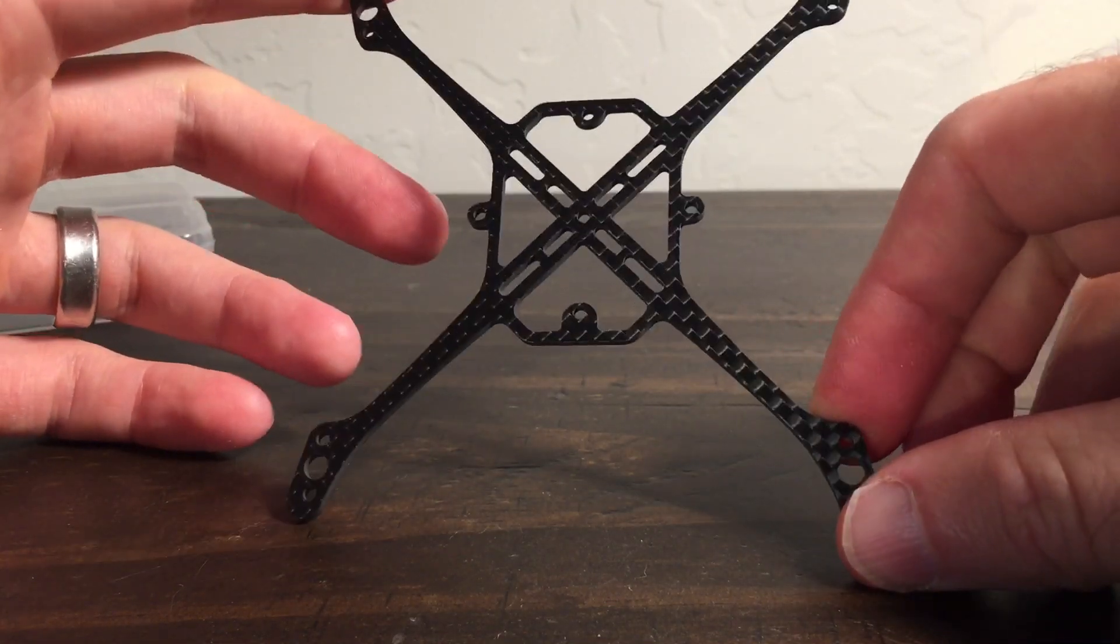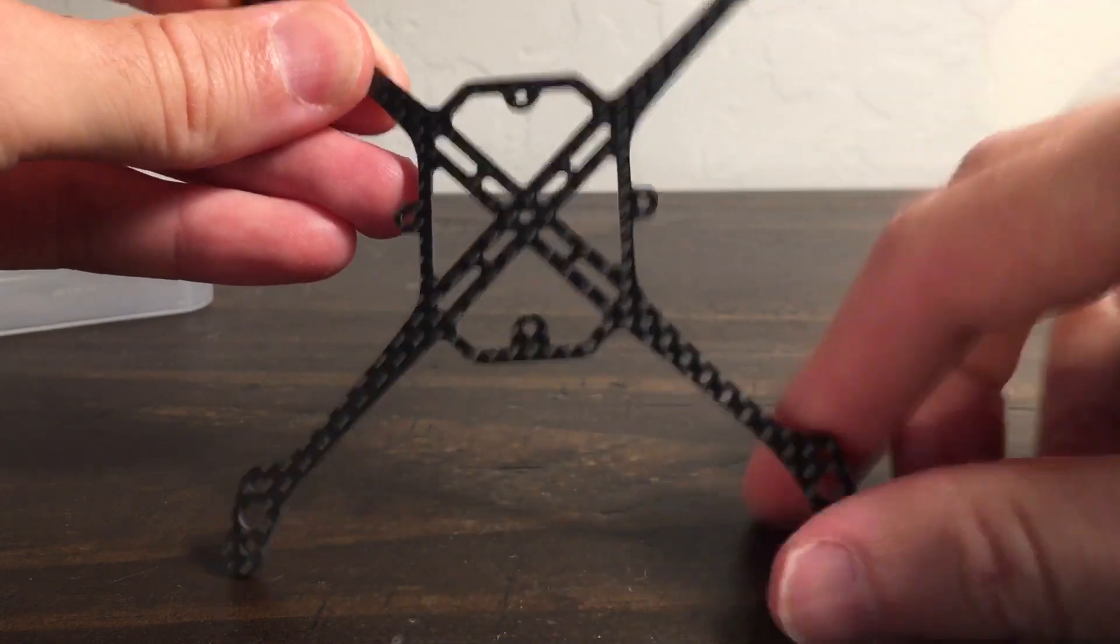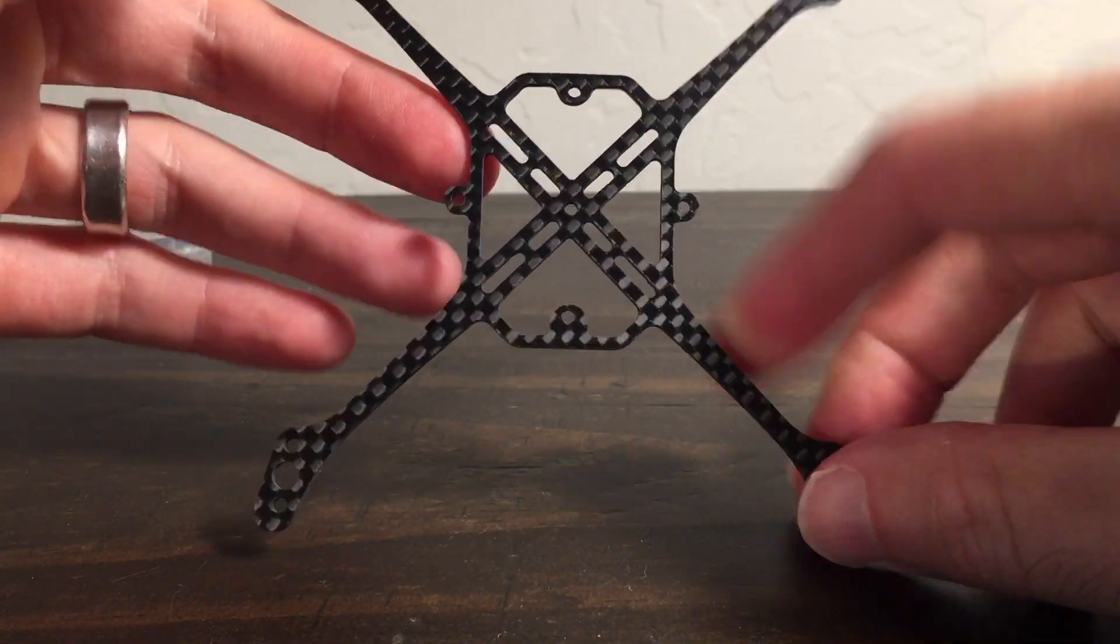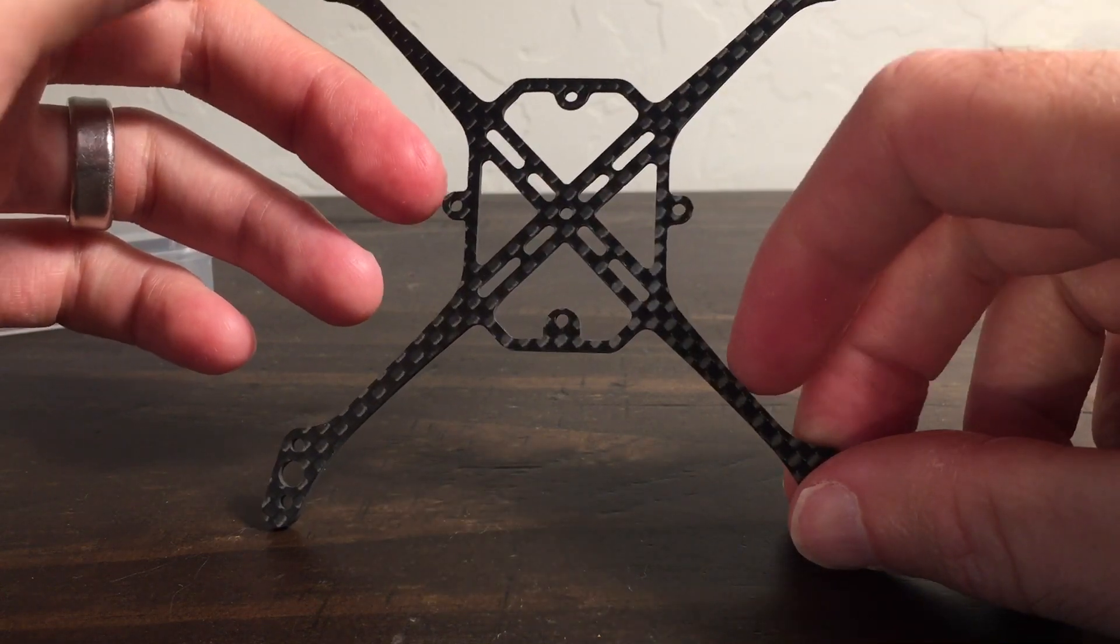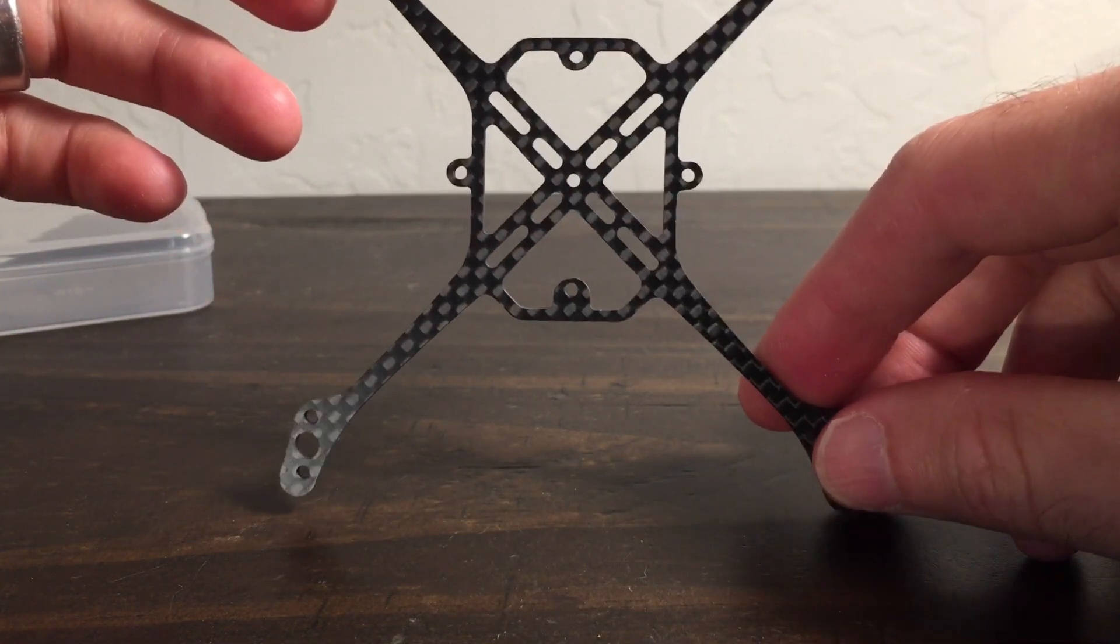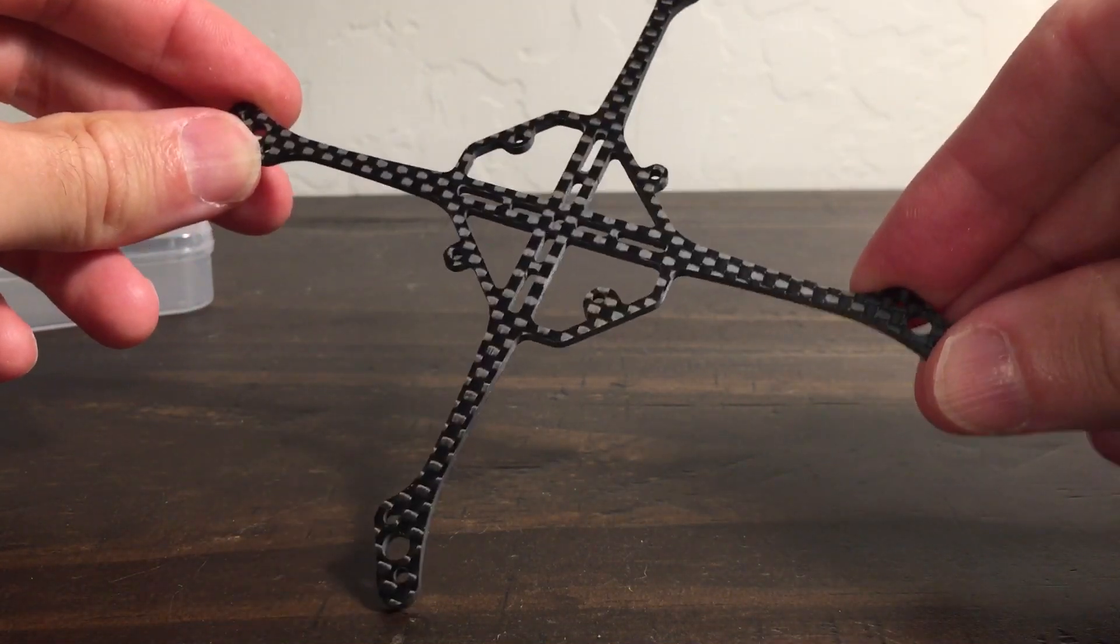So this really makes this a very universal frame, because now you can do normal 25 by 25, 25.5 by 25.5 whoop style. You can do it diamond, you can also do it square. You can also do 16 by 16 or 20 by 20, and you can pretty much mount anything on this frame, which is kind of nice.